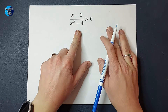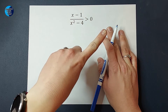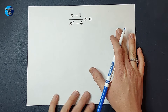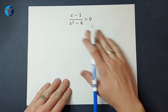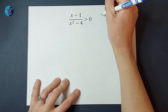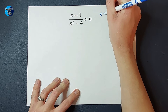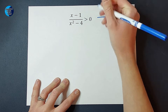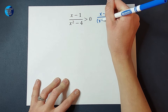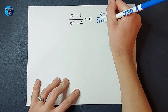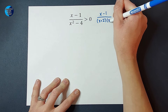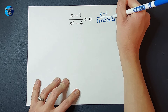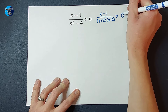This is actually a difference of two squares — if you need a review on that, I will link one in the corner. So this is going to stay x minus one on top, and on the bottom we are going to have x plus two times x minus two. And this is still greater than zero.